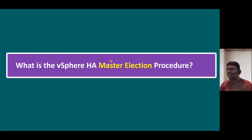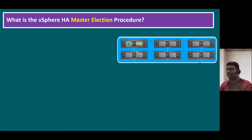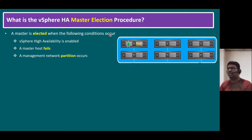What is the vSphere HA master election procedure? A master is elected when the following conditions occur. First condition: vSphere HA is enabled — when we enable vSphere HA in our cluster, it configures one master and all remaining hosts as secondary ESXi hosts. Second condition: the master host fails — another ESXi host takes on the new master role. Third condition: a management network partition occurs — if the master host is somehow isolated or separated from the other ESXi hosts on the network, a new master ESXi host may be elected.